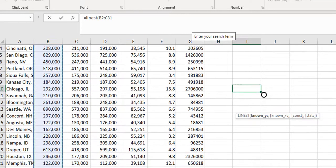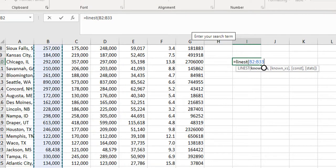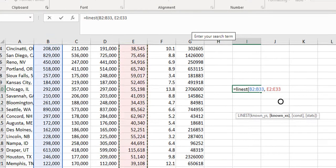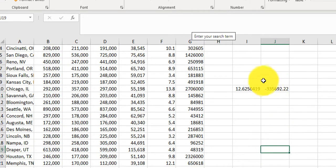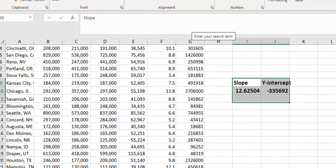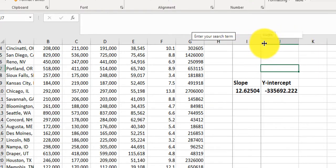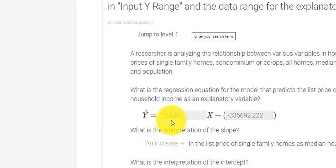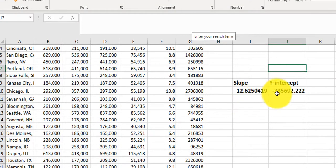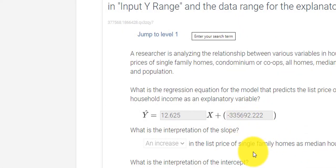And then parentheses, you always start with your y variable, comma, space, x variable, close parentheses, press enter. You see how I have, this is my slope and this is my y-intercept. And if you look at these values, let's make this a little bigger so you can see better. If I were to put these values into here, they're the same. 12.625. Y-intercept, negative 335,000 and change. Negative 335,000 and change.